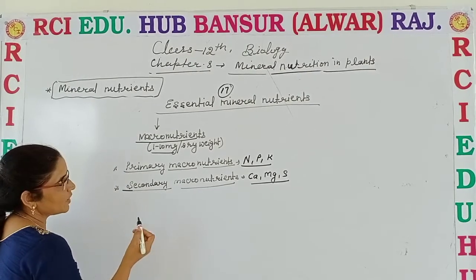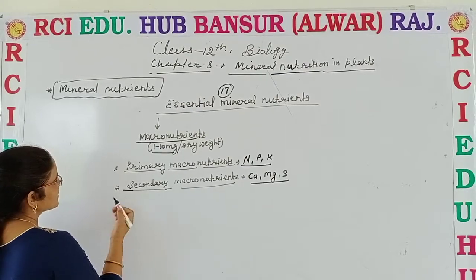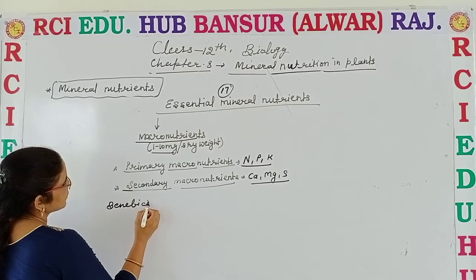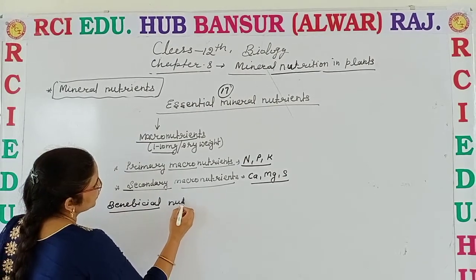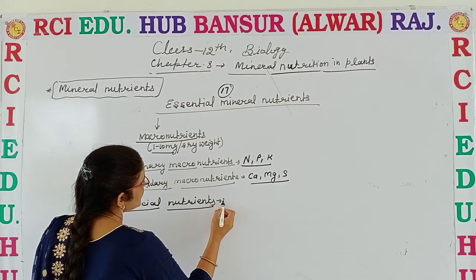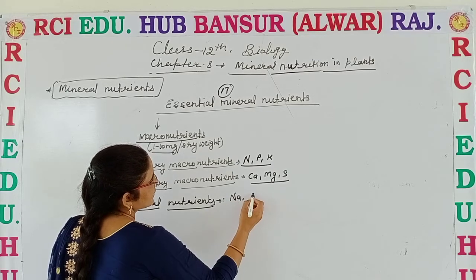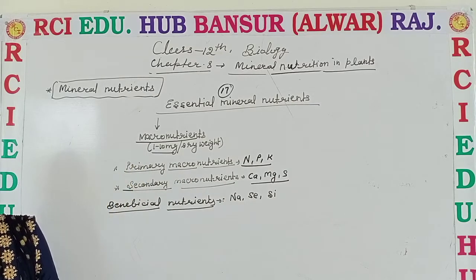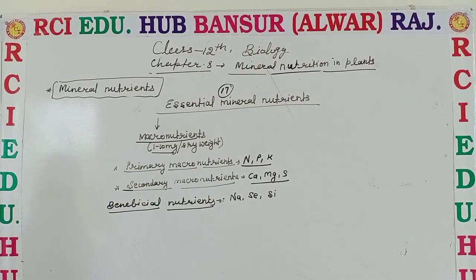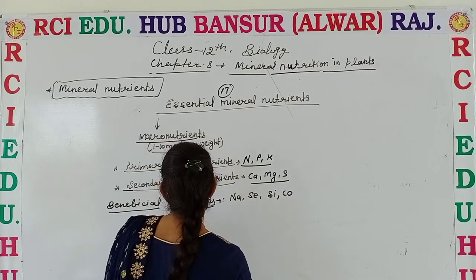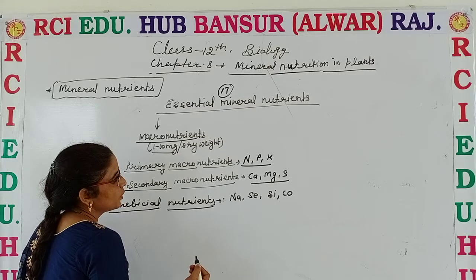Except these 17 essential mineral nutrients, some other elements are also there which are known as beneficial nutrients. These are sodium, scandium, and silicon. Cobalt is also there. So these are known as the beneficial nutrients.